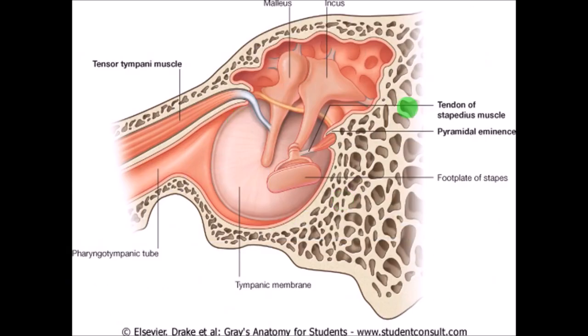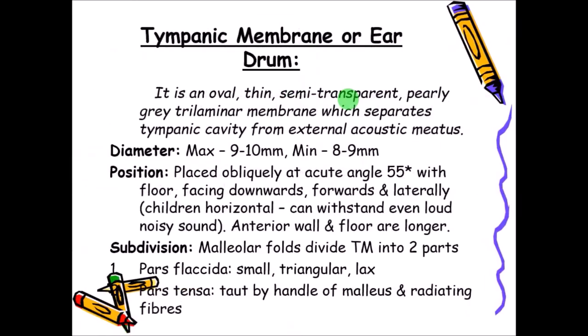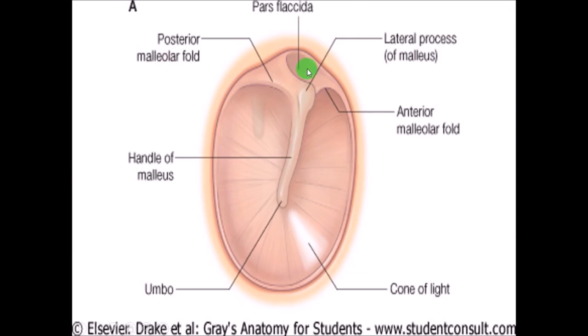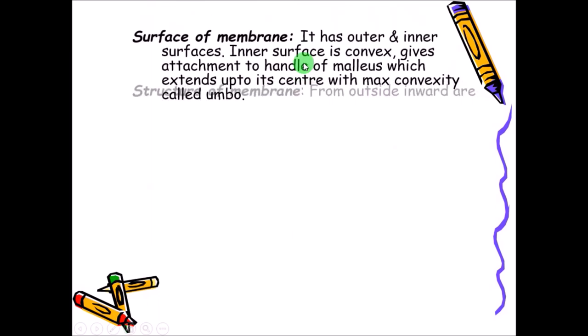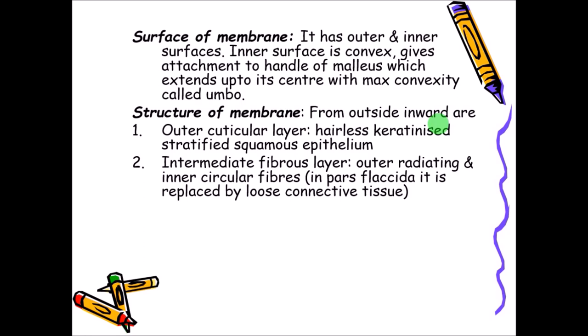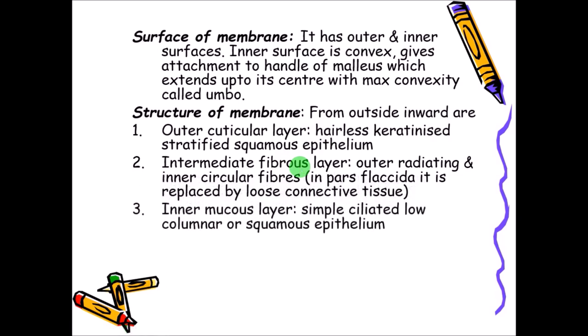The innermost mucosal layer faces the middle ear and is lined by simple ciliated columnar or sometimes squamous epithelium. So the three layers of the tympanic membrane are: the outer cuticular layer, the intermediate fibrous layer, and the innermost mucosal layer.